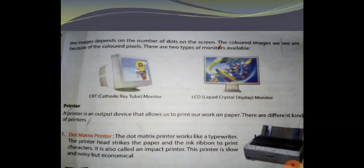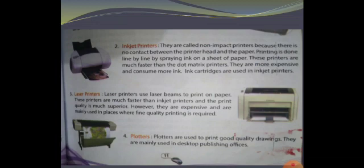Inkjet printers are called non-impact printers because there is no contact between the printer head and the paper. Printing is done line by line by spraying ink on a sheet of paper. These printers are much faster than dot matrix printers, but they are more expensive and consume more ink. Ink cartridges are used in inkjet printers.